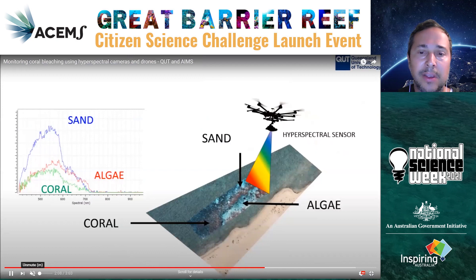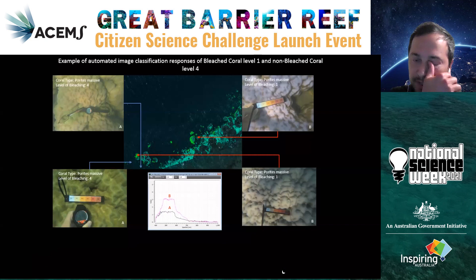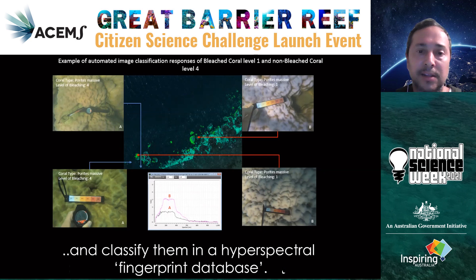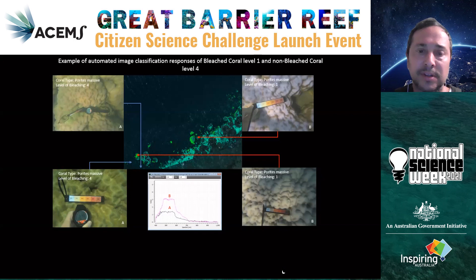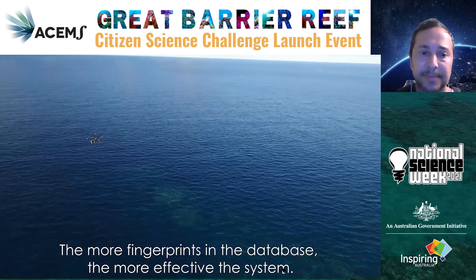This is an example of how the hyperspectral looks at different objects — the sand, the coral, the algae. Using the information from the divers that gives us the type of coral and the type of bleaching, we can develop classification algorithms that allow us to determine the type of coral bleaching.